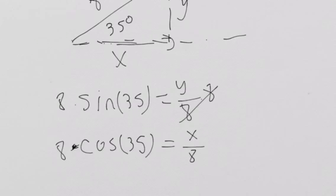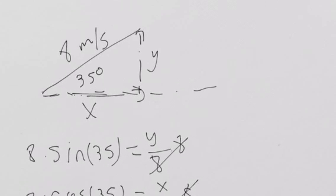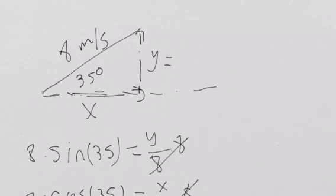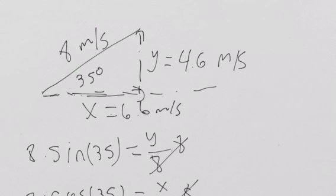So then you type those into your calculator and you get the vertical component is equal to 4.6 meters per second and the horizontal component is equal to 6.6 meters per second. So just like we predicted, the horizontal component is larger than the vertical. Together they come together to make a diagonal velocity of 8 meters per second.